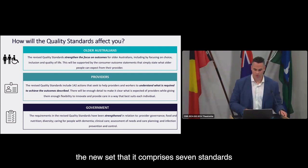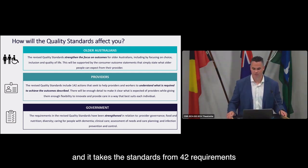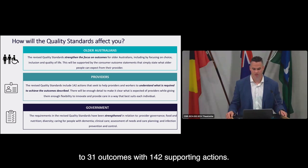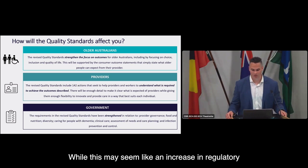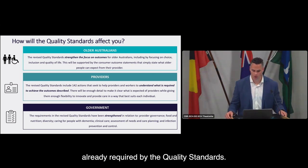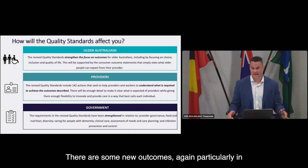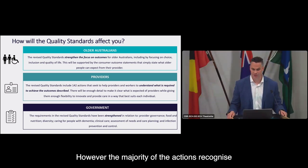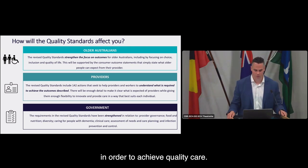The new structure comprises seven standards, taking the standards from 42 requirements to 31 outcomes with 142 supporting actions. While this may seem like an increase in regulatory requirements, the intent is to provide more clarity on how you can achieve the outcomes already required by the quality standards. There are some new outcomes, particularly in food and nutrition and clinical care, but the majority of the actions recognise things that providers are or should already be doing in order to achieve quality care.